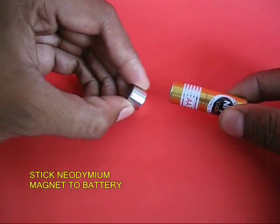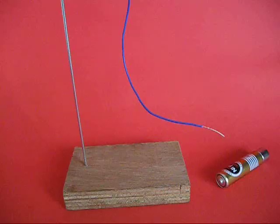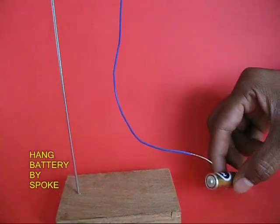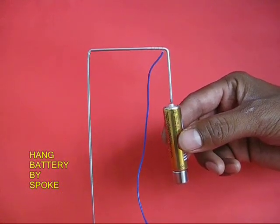Take the strong neodymium magnet and stick it to the base of the battery. Now the battery will also act like a magnet. And now you can hang the bottom of the battery to the sharp tip of the spoke.